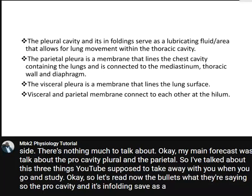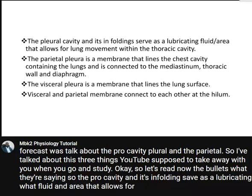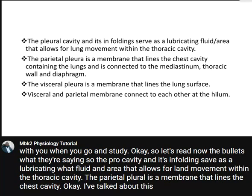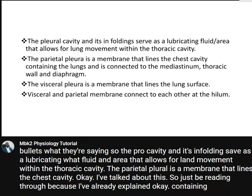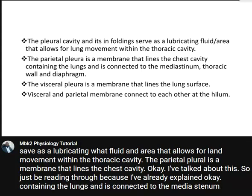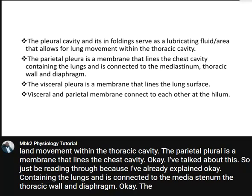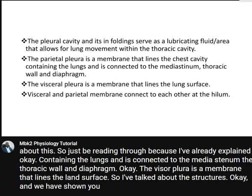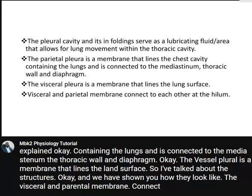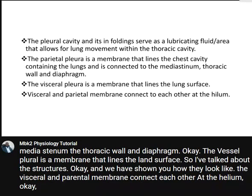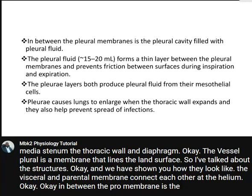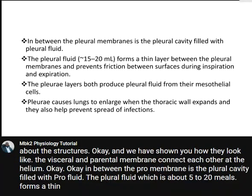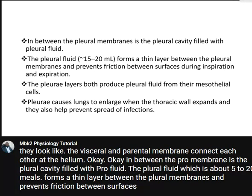Reading the slide bullets: the pleural cavity contains pleural fluid, which serves as a lubricating fluid and an area that allows for lung movement within the thoracic cavity. The parietal pleura is a membrane that lines the chest cavity containing the lungs and is connected to the mediastinum, the thoracic wall, and the diaphragm. The visceral pleura is a membrane that lines the lung surface. The visceral and parietal membranes connect each other at the hilum.